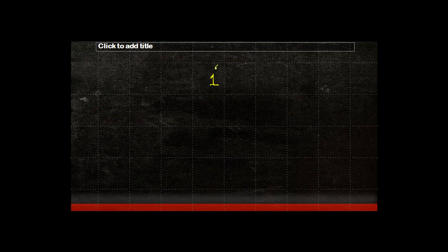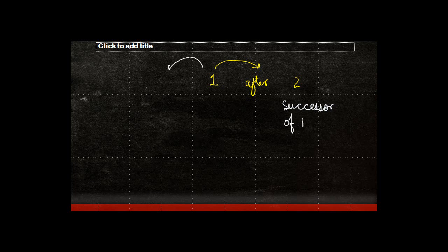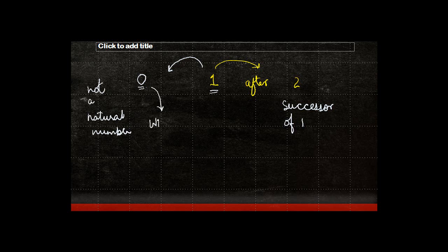What happens in the case of number one? After one we have two, so two will be the successor of one. But is there a natural number which comes before one? The answer is no, because before one you have zero, and zero is not a natural number. Therefore we say that the number one does not have a predecessor which is a natural number.